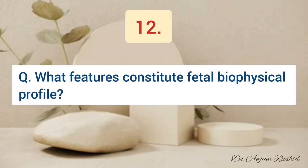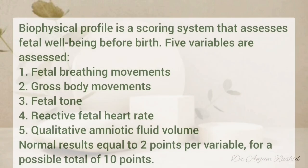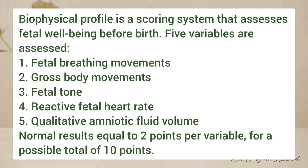What features constitute the fetal biophysical profile? The biophysical profile is a scoring system that assesses fetal well-being before birth. Five variables are used: fetal breathing movements, gross body movements, fetal tone, reactive fetal heart rate, and qualitative amniotic fluid volume. A normal result is equal to two points per variable, for a possible total of 10 points.